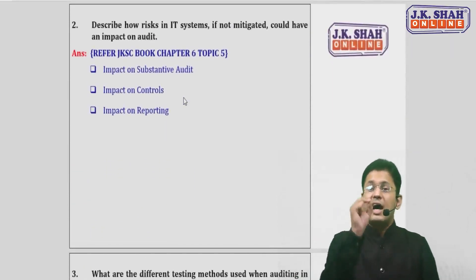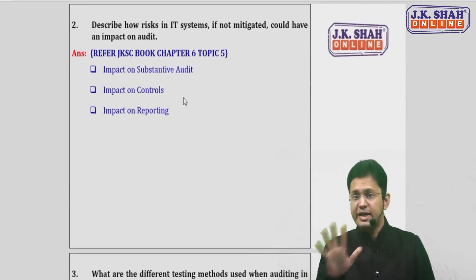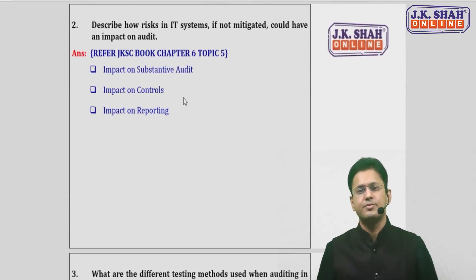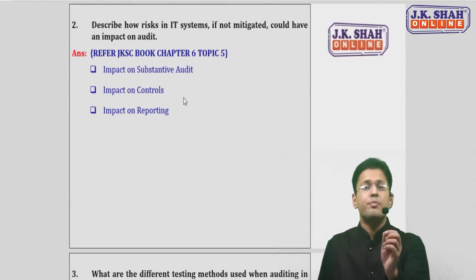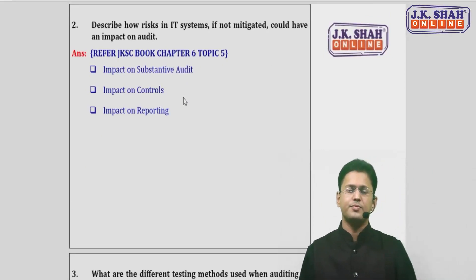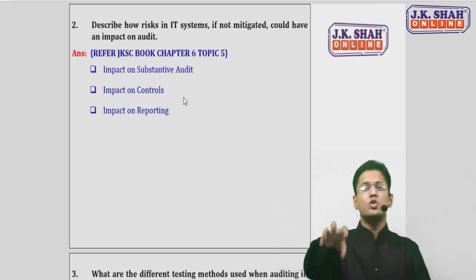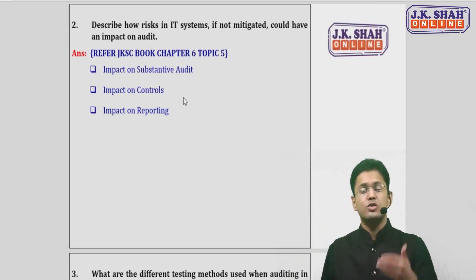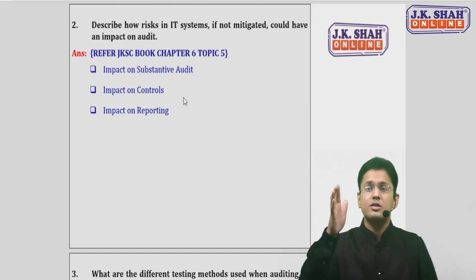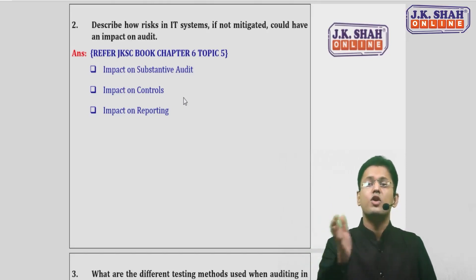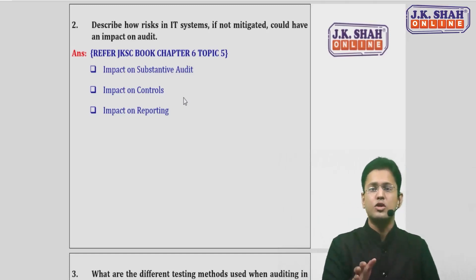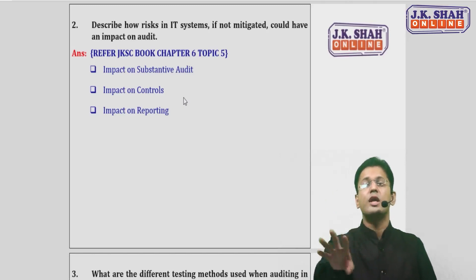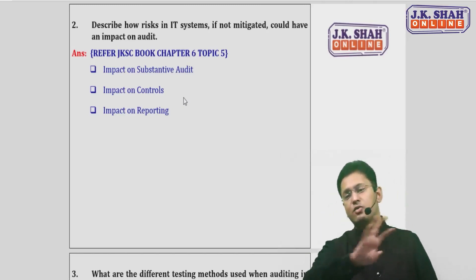IT risk, if not mitigated, can severely impact the audit. First, it has an impact on controls, because the auditor is relying on the entity's automatic and IT-dependent controls. Your reliance on those controls may lead to a disastrous position because there is an IT risk and the controls are not able to prevent or detect it. So the first impact is you will not be able to rely on those controls anymore if IT risk is not mitigated.